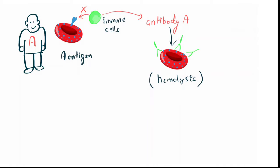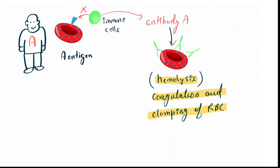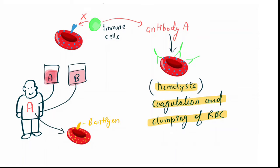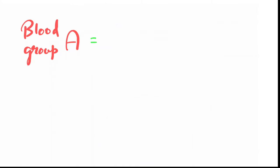Hence, blood group A will produce antibody B. This is the reason that during blood transfusion, if a person belongs to blood group A, they can only be transfused with blood group A. But if we give blood group B to a person with blood group A, they will produce antibodies against the B antigen of blood group B, which will cause an antigen-antibody reaction, causing RBC to clump up and may cause hemolysis.